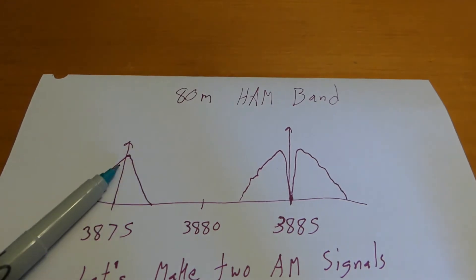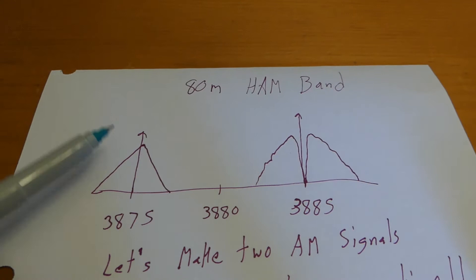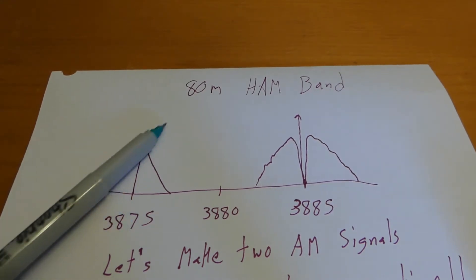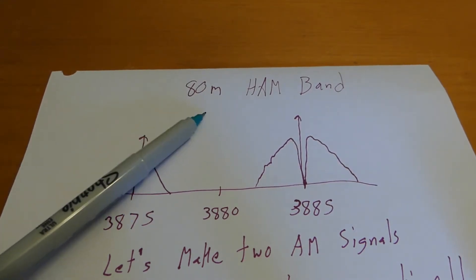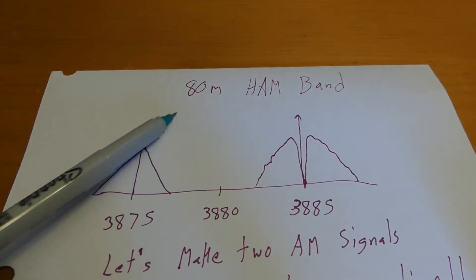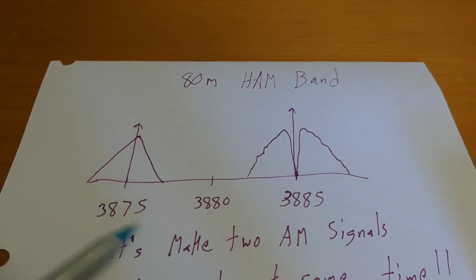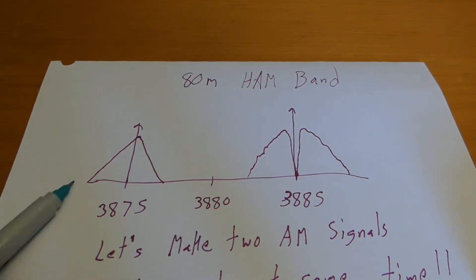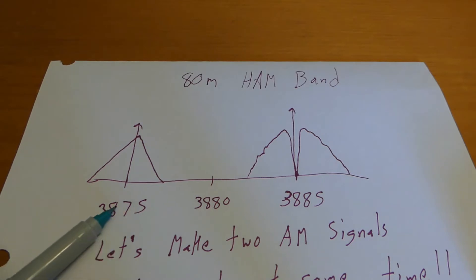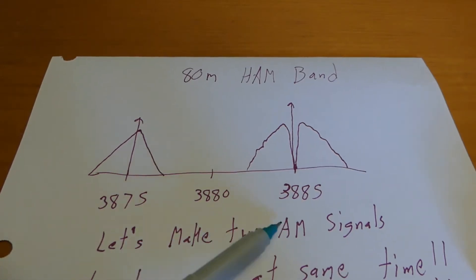If you're an amateur radio operator, you probably already know this, but for those who are not, here's a quick review. We have the 80-meter ham radio band — 80 meter stands for the wavelength. Some common frequencies that ham radio operators use for AM are 3875 kilohertz or maybe 3885 kilohertz.